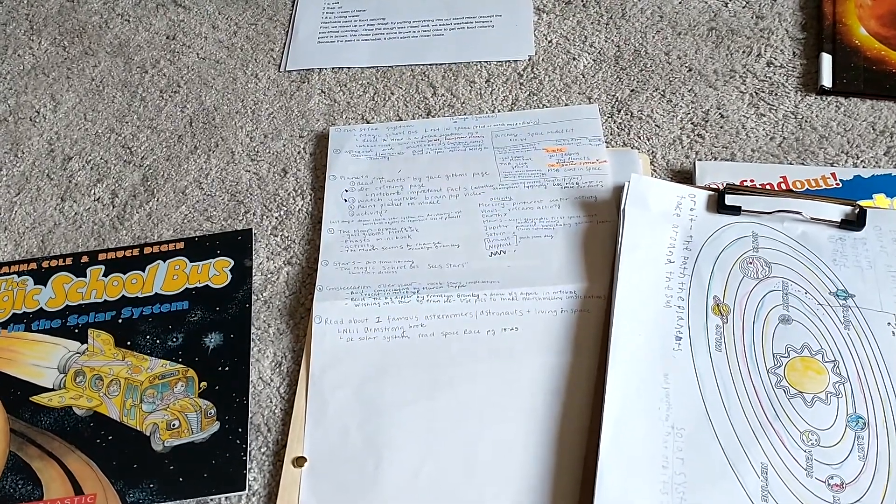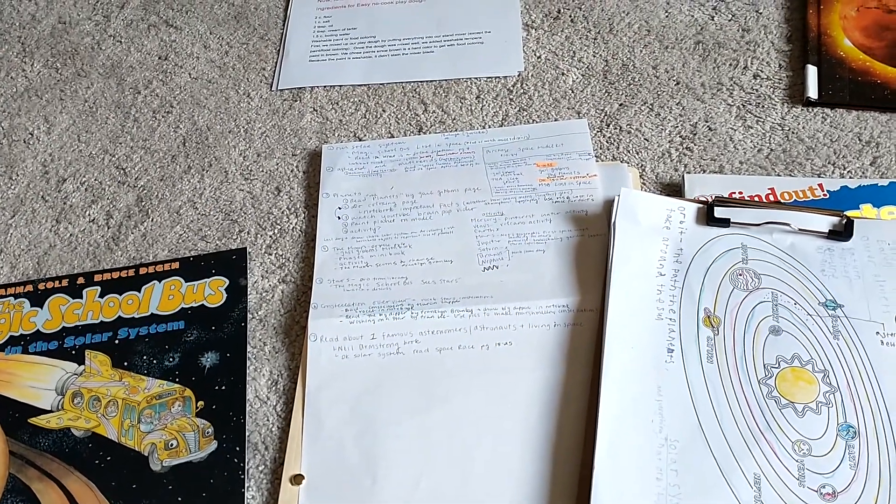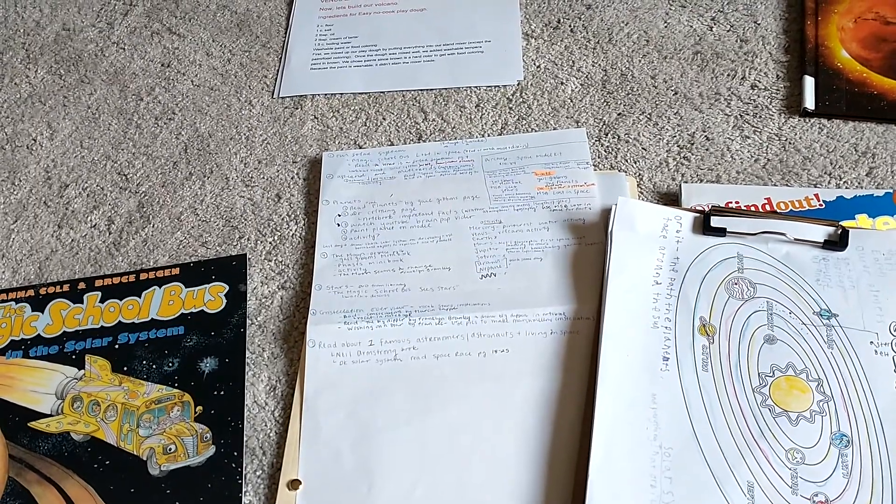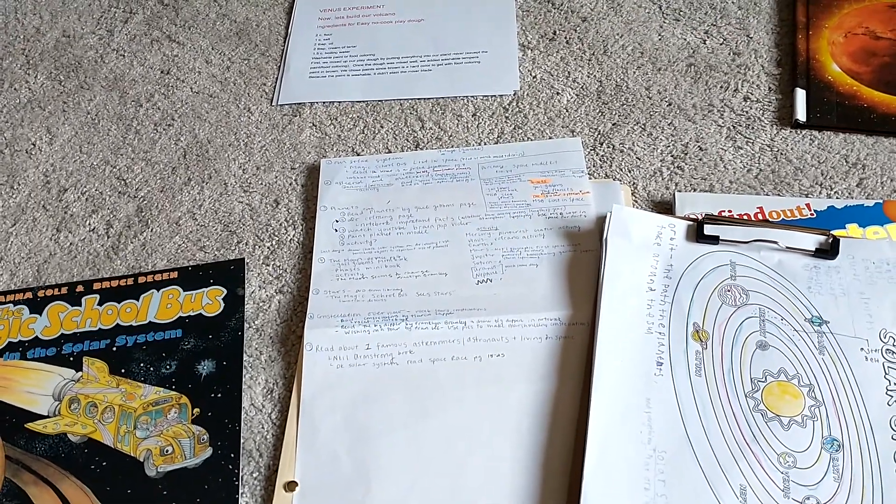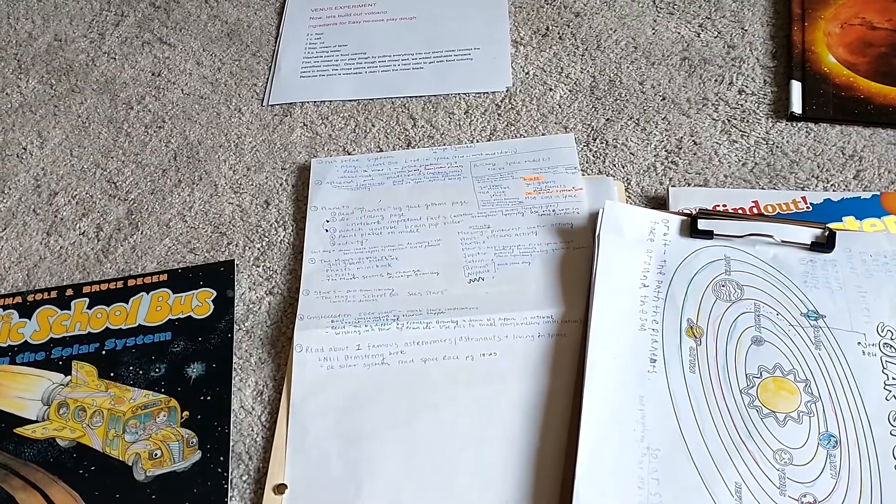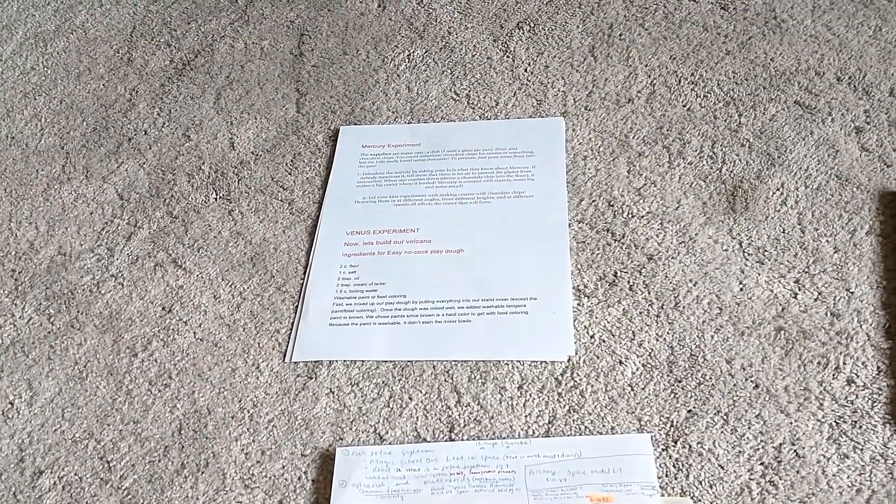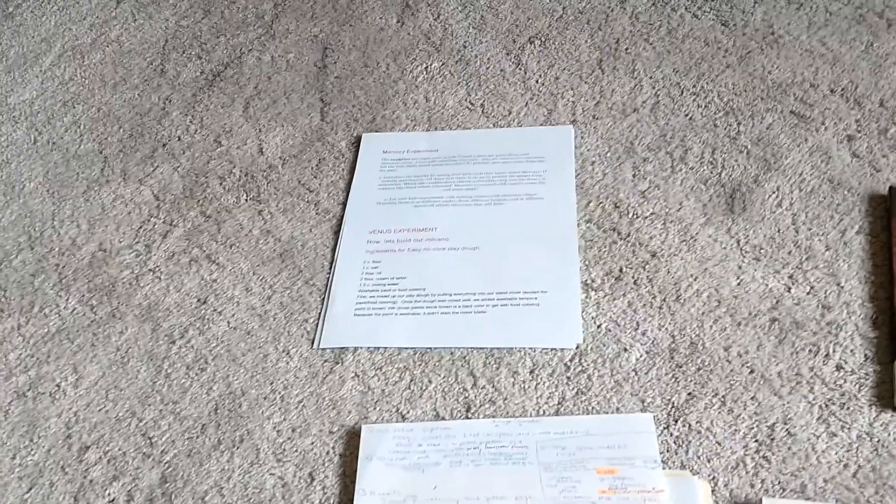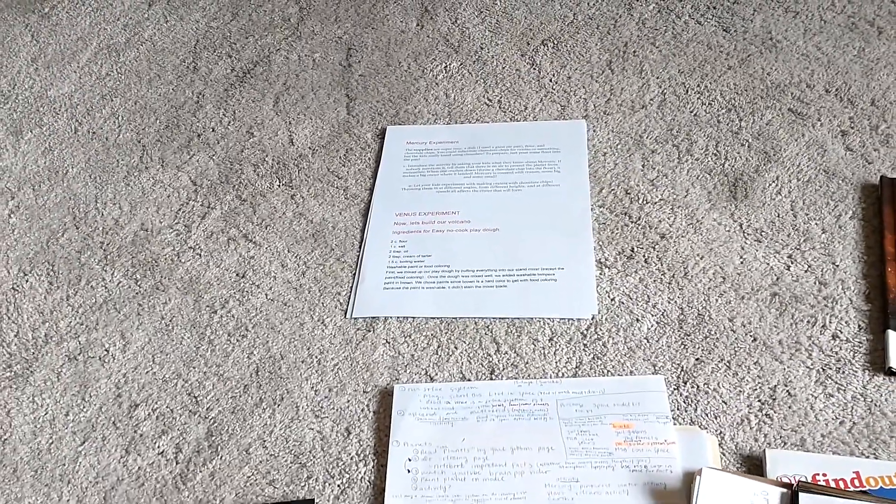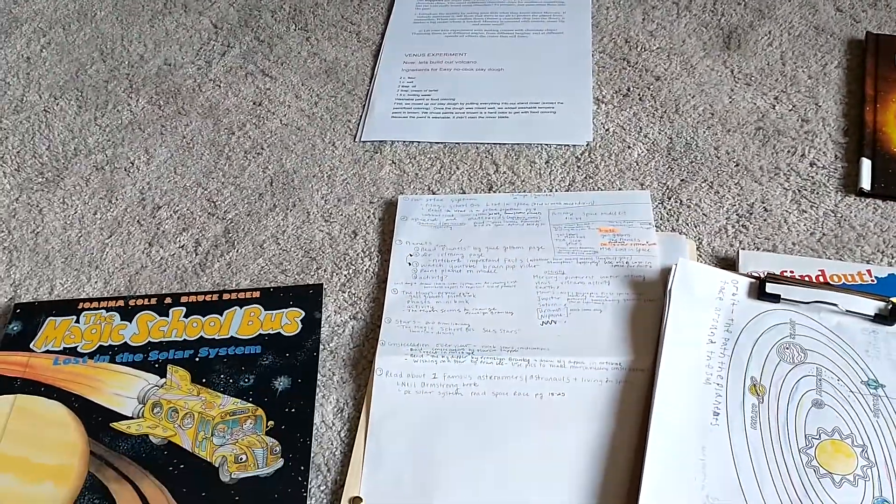For Venus, we did a volcano study, a little mini study, and we created a volcano because Venus is covered in volcanoes. So what I did with my experiments is I went on Pinterest and found a bunch of experiments and copy and pasted and just made a big packet of all the experiments that I want to do with each planet.